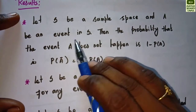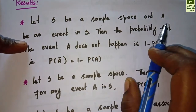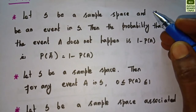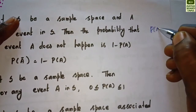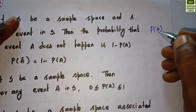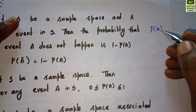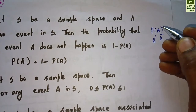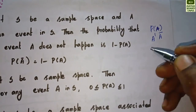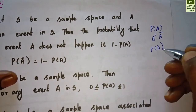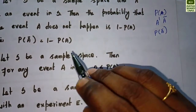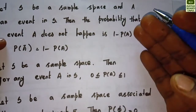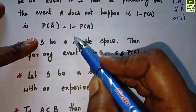Now for some basic results. Let S be a sample space and A be an event in S. The probability that the event A does not happen is given by P(Ā) — that is, A-bar or A-complement. The formula is: P(Ā) = 1 − P(A).